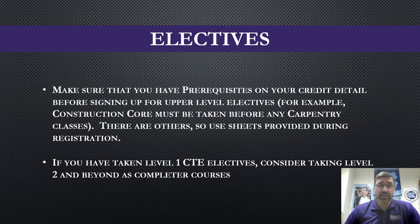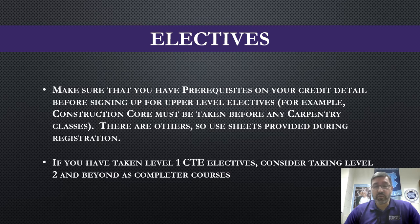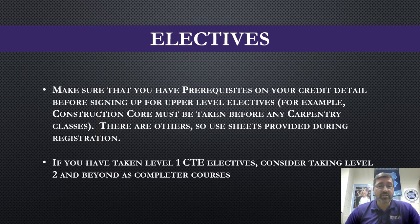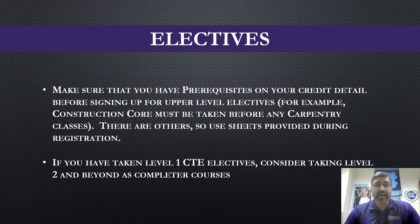After you've made your core class selections, you'll round out your choices with electives. When making these choices, be sure to pay attention to whether any courses you're interested in have prerequisites. Some are obvious — you can't take Spanish 2 without Spanish 1 first — but some aren't. For example, if you're interested in a carpentry course, you must have taken Construction Core first. Refer to the prerequisites sheet and your credit detail sheet to make sure any prerequisites are covered. In the CTE area, if you've taken a CTE class, consider taking the second level as a completer course.